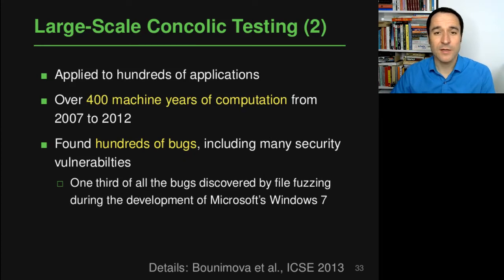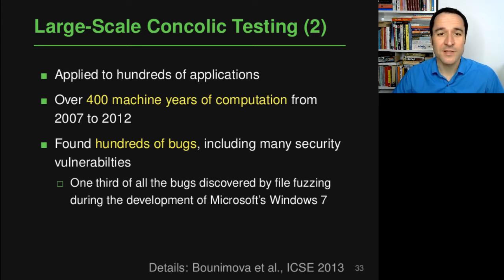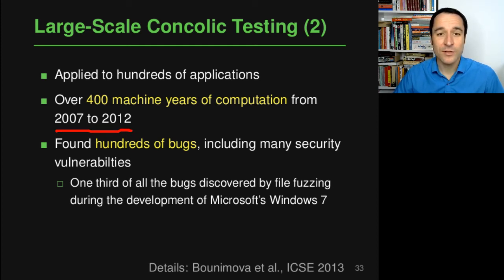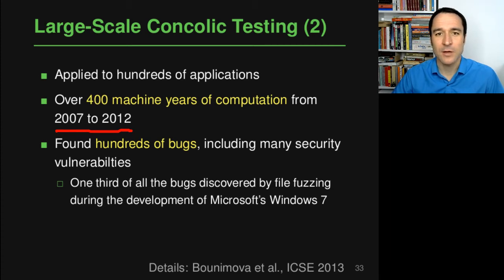The SAGE tool has been applied to many different applications relevant to Microsoft — hundreds of applications. In the five-year period between 2007 and 2012, more than 400 machine years of computation were used to run this concolic testing. It's expensive to run, but it has also been worthwhile, which is why Microsoft decided to invest that much computational power into it. SAGE has found hundreds of bugs in these programs, including many security vulnerabilities.